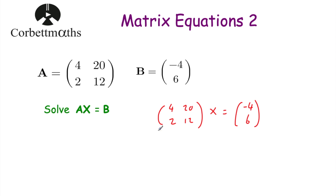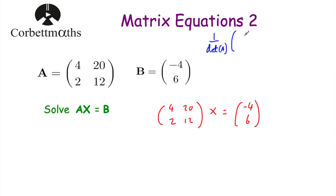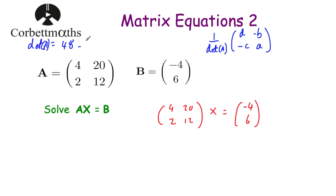So we need to find the inverse of A. To find the inverse, we do 1 over the determinant of A, then swap the diagonal elements and change the signs of the off-diagonal elements. The determinant of A is 4 times 12 minus 2 times 20, which is 48 minus 40, equal to 8. So the inverse of A equals one-eighth times the matrix 12, negative 20, negative 2, 4.